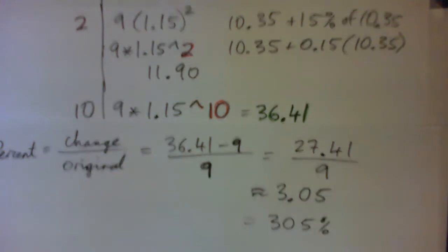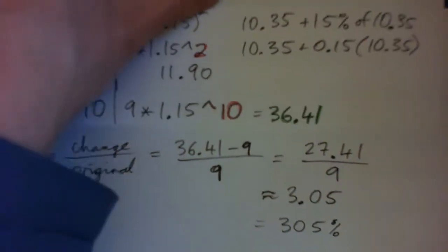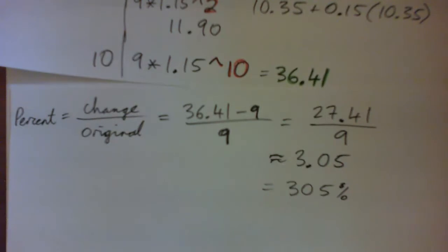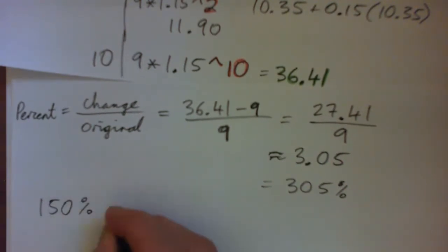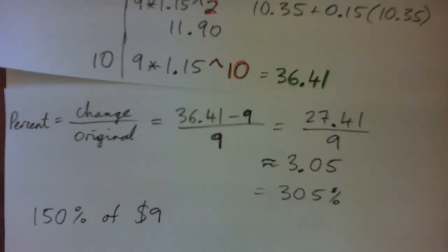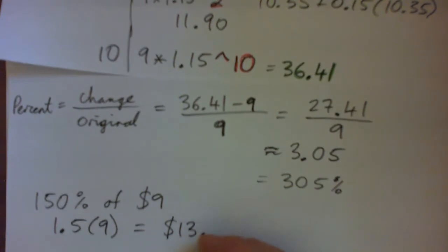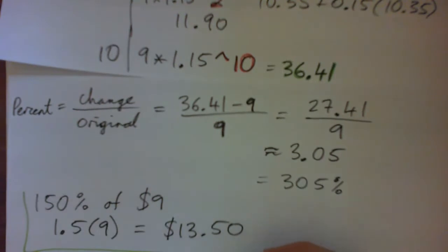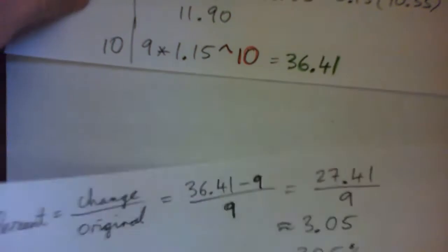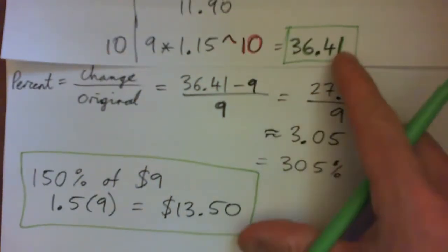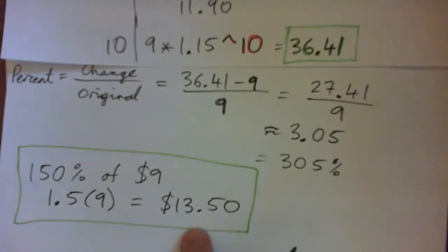The other thing about that problem: somebody claimed that 15% per year for 10 years is the same as a 150% increase. But if you get 150% of nine dollars, you don't get $36.41. A 150% increase is simply 1.5 times nine, which is $13.50. So $36.41 versus $13.50 — those are completely different things.